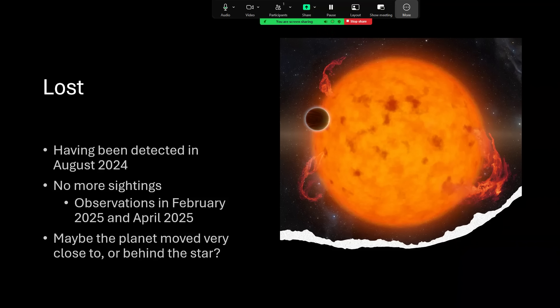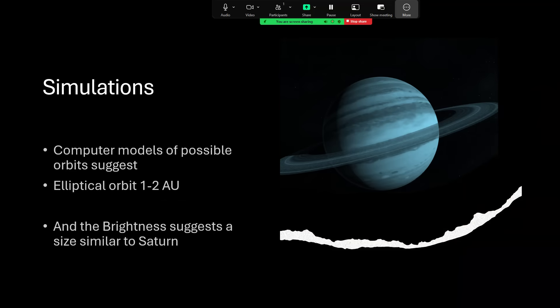Now, that's interesting. That means it's moved. And from the results of the non-appearance of it, a number of simulations have been done to suggest what the orbit might be. And it looks like the best fit is an elliptical orbit around about one to two astronomical units.